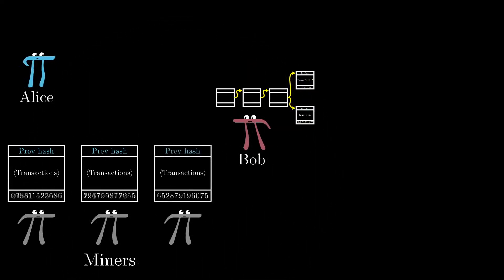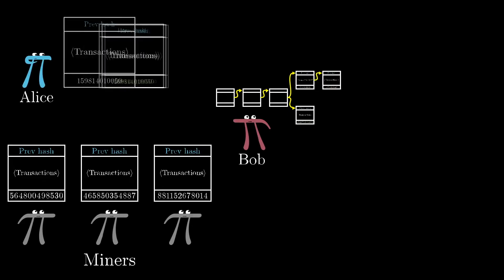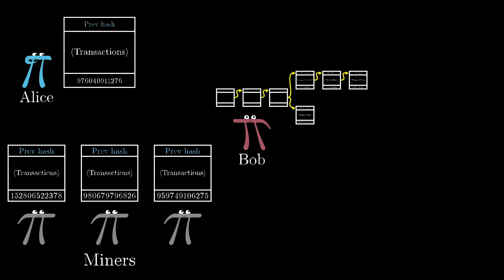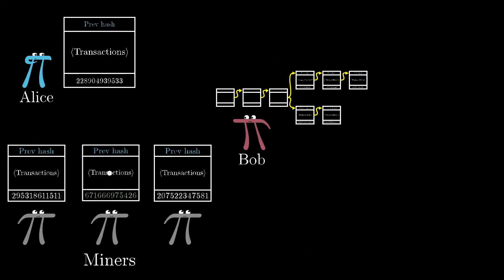So to keep him believing this fraudulent block, Alice would have to do all of the work herself to keep adding blocks on this special fork in Bob's blockchain that's different from what he's hearing from the rest of the miners. Remember, as per the protocol, Bob always trusts the longest chain that he knows about.